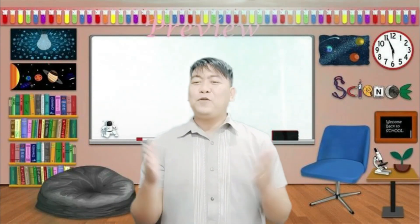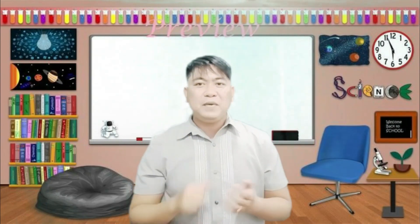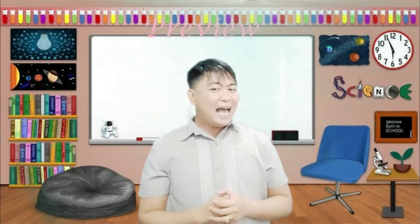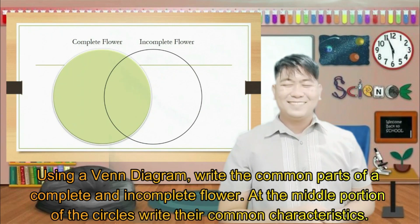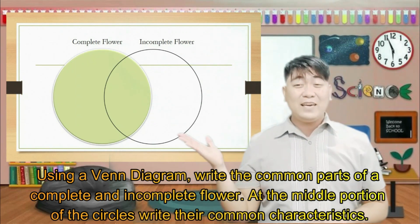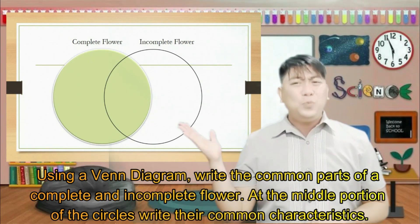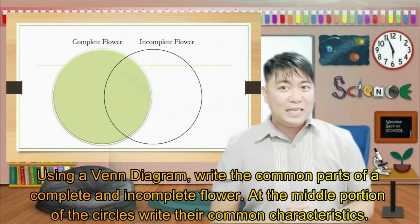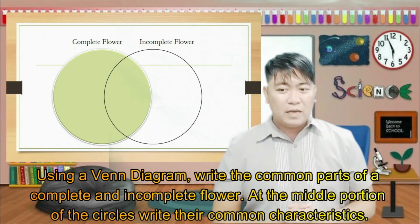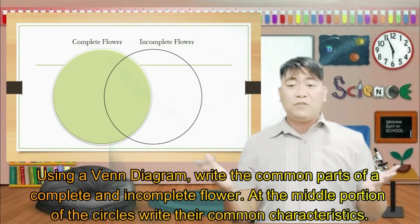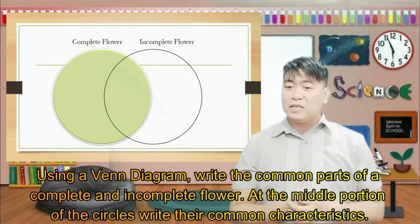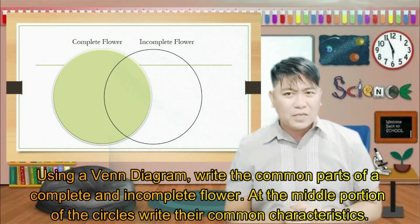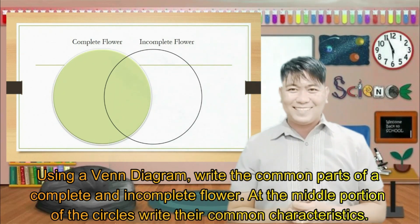Before we end, learners, let me give you this task to do at home. Using a Venn diagram, write the common parts of a complete and incomplete flower. At the middle portion of the circles, write their common characteristics. Good luck, learners! You can do it!